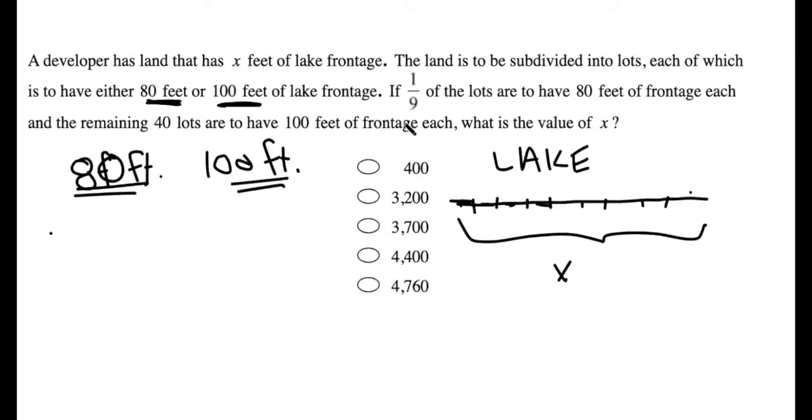Now the problem tells us that one-ninth of these lots, however many there are, are going to be 80-foot lots. So I don't know how many total lots there are yet, but I do know that one-ninth of the total number of lots are 80-foot lots.